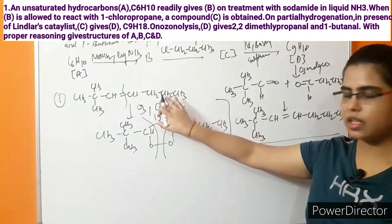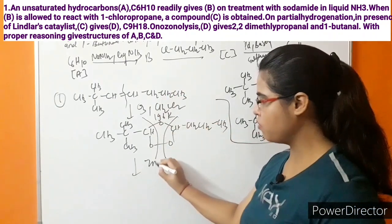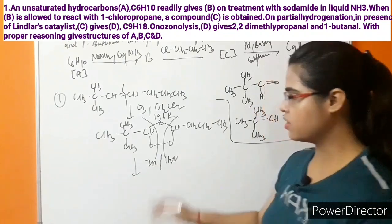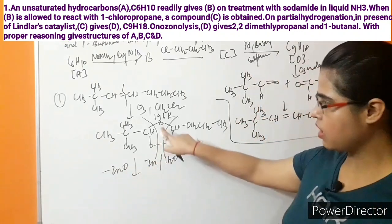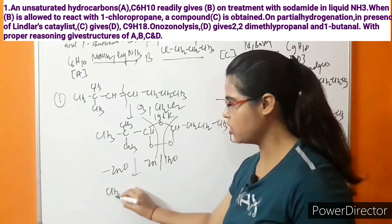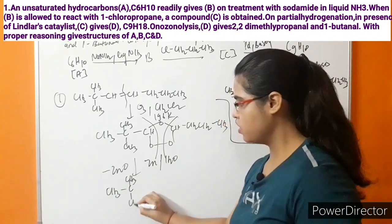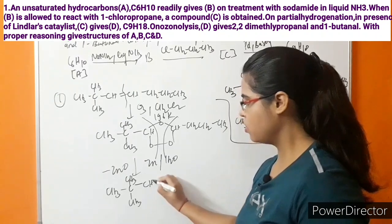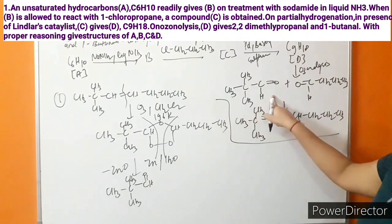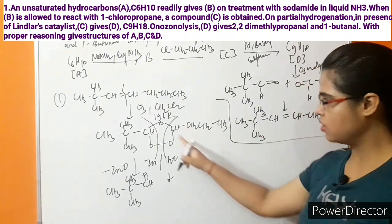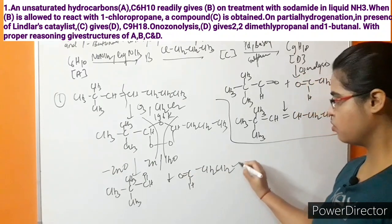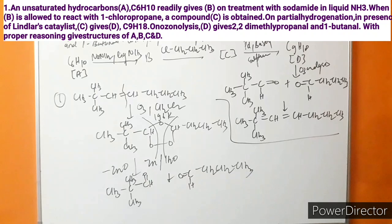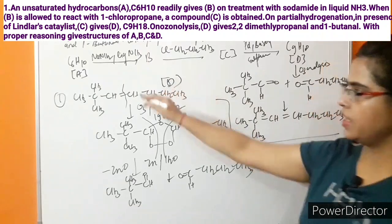The ozonide breaks down, and in the presence of zinc dust and water (reductive cleavage), the zinc combines with oxygen forming ZnO. This gives two aldehydes: (CH3)3C-CHO (2,2-dimethylpropanal) and OHC-CH2-CH2-CH3 (1-butanal). These two compounds confirm that compound D is correct.